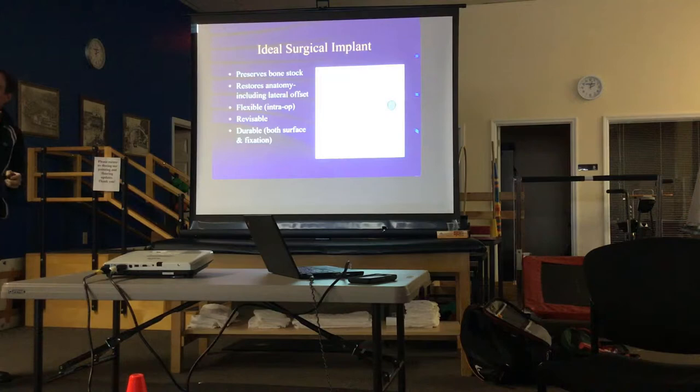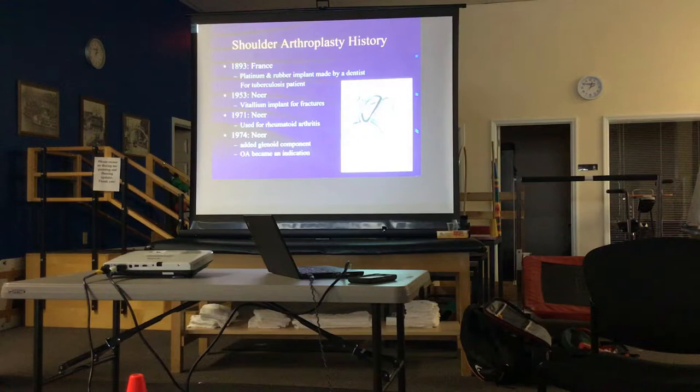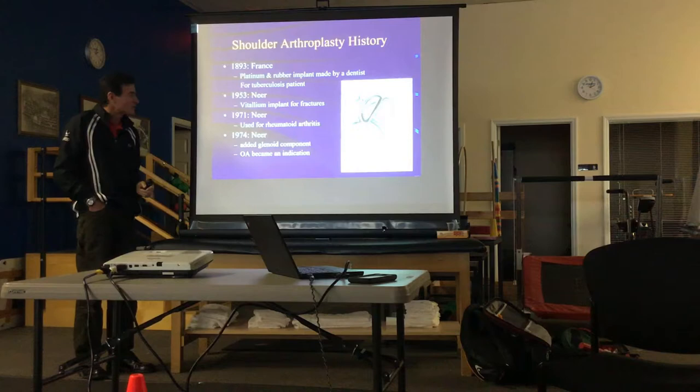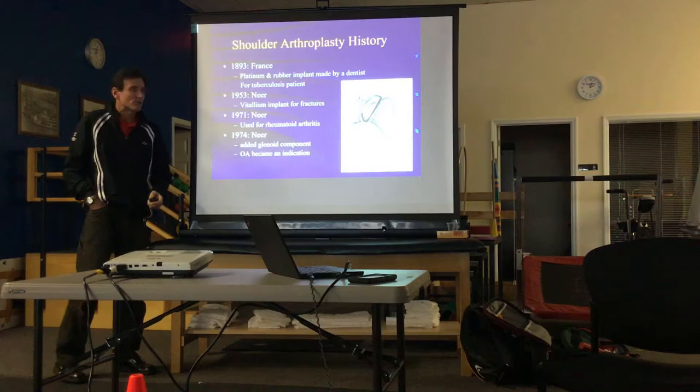A little bit on the history: in 1893 the first shoulder replacement was done, made out of rubber and platinum. As the years progressed, it was used for more and more indications — initially just for RA with only a humeral implant. Then a glenoid component was added in 1974 by Charles Neer, the famous shoulder surgeon from New York, and the indication expanded to include osteoarthritis, which is its primary use today.